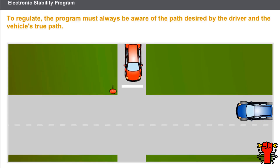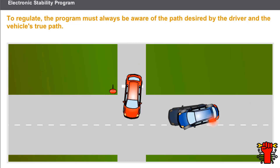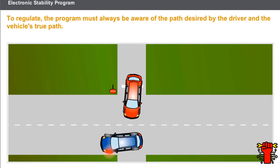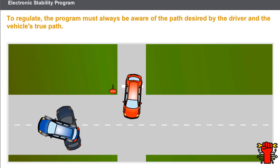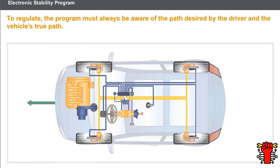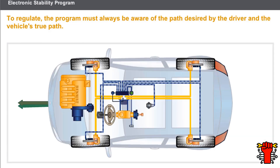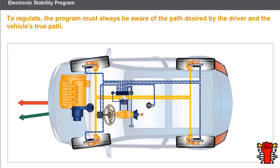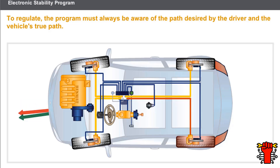Now let's take a look at the electrical operation of the electronic stability program. To regulate, the program must always be aware of the path desired by the driver and the vehicle's true path. The computer receives information relating to the steering wheel angle, the yaw speed, and the transverse acceleration. During regulation, the system also uses the information from the brake pressure sensor.